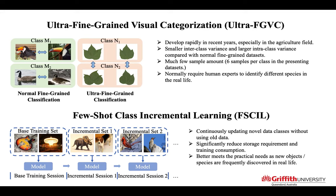Recently, new species of plants are continuously discovered and need to be added to the datasets. However, retraining the whole model with previous data is time-consuming and may also lead to data leakage issues. Existing methods solve these problems by using future class incremental learning, which was first introduced in 2020.